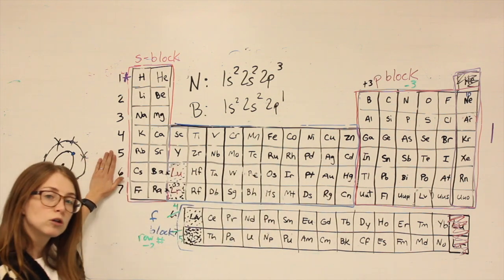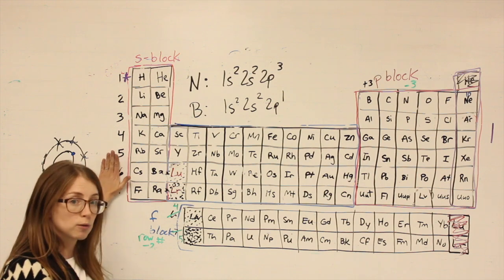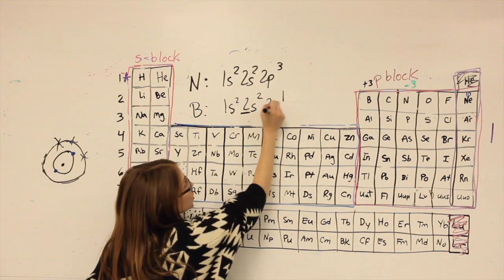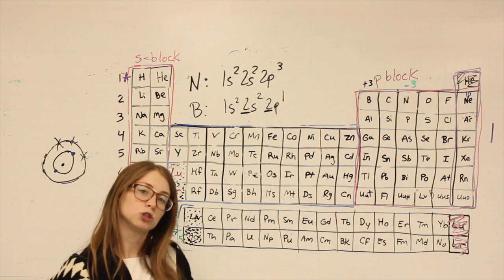Anytime we're gaining or losing electrons, it's going to be from the outermost shell. Whatever coefficient is the largest is the outermost shell.